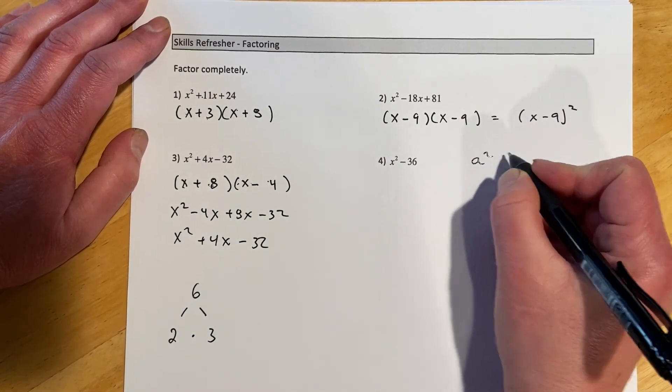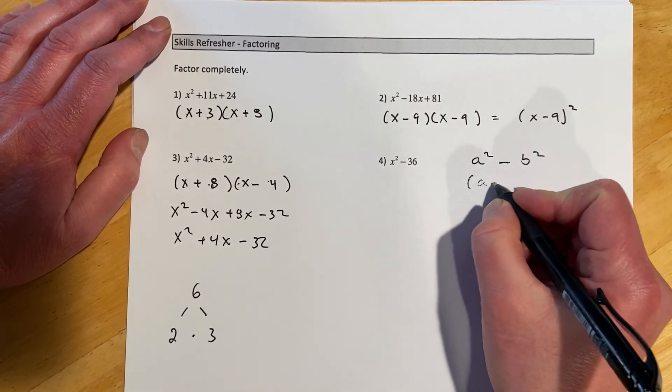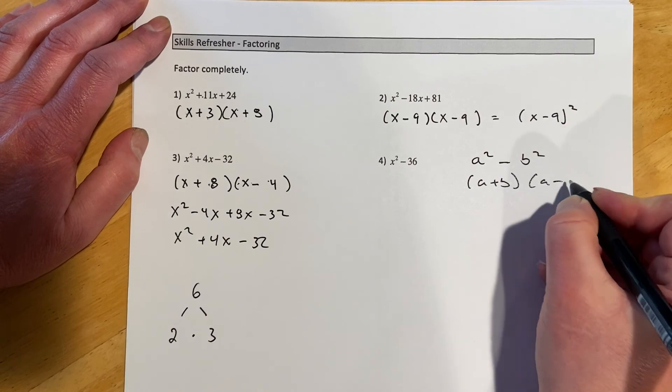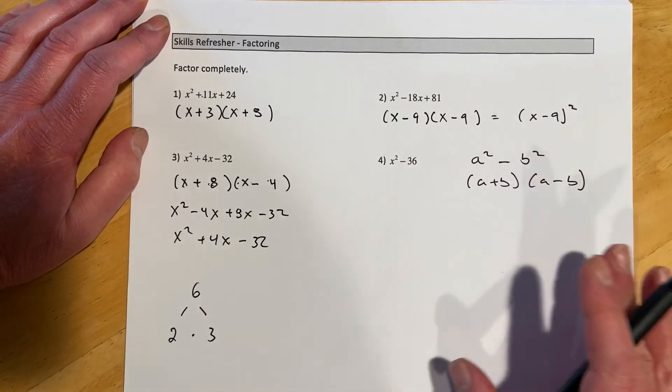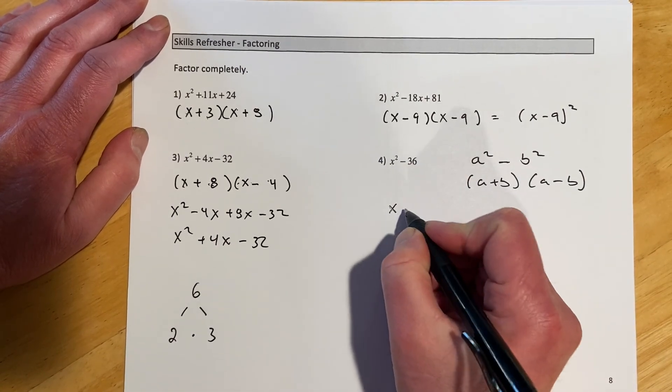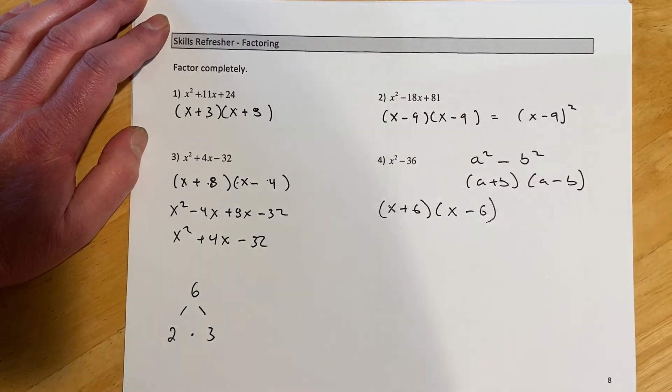But you might remember when you have ones of the form a squared minus b squared, those always come out a plus b and a minus b. And that's called a difference of squares, and we'll run into that a lot, so that's a good one to know. So this is going to be x plus 6 and then x minus 6.